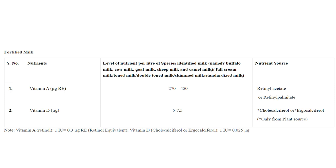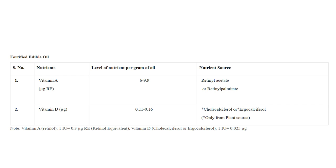Vitamin A should be added at 40–45 mg and vitamin D at 5–7.5 mg. The nutrient source for vitamin A is retinol acetate or retinol palmitate; for vitamin D, it is calciferol or ergocalciferol, which should be added only from plant sources. For edible oil, vitamin A is 629.9 mcg and vitamin D is 0.11–0.16 mcg per gram, using calciferol or ergocalciferol from plant sources only.